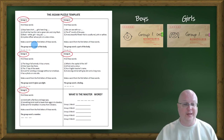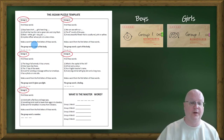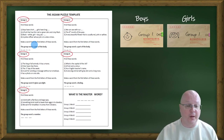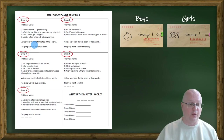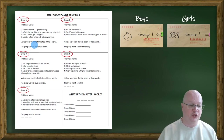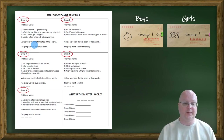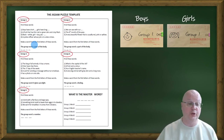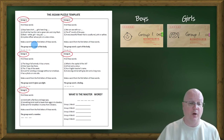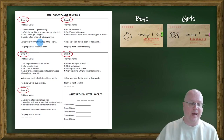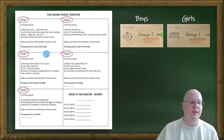As soon as the group words have been formed, they are written on the board. The first letters of all the group words give the solution to the whole puzzle if you read from group one to five.